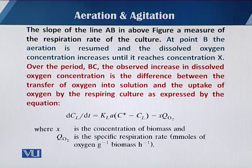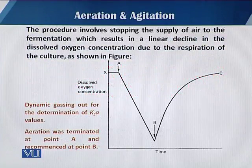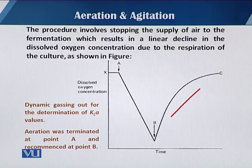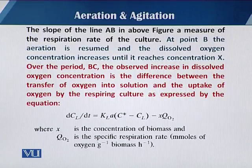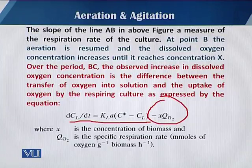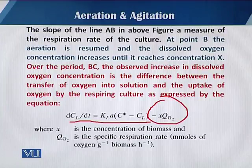The slope of that line can be used for the calculation of KLA. This equation is almost the same as discussed in the static method, but with a minor variation: a term denoted by X·QO2, which represents oxygen utilization, because during this process some oxygen is utilized by the cells.